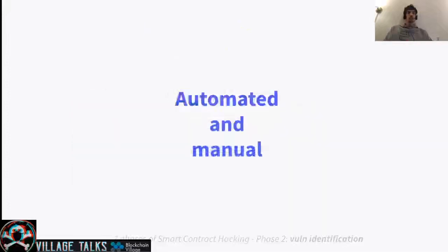One thing that always surfaces when we talk about vulnerability identification in smart contracts is the difference between automated and manual work. I think this also happens in application security, where you might have scanners that can help you identify vulnerabilities in an application, but pen testers also tend to do manual work. It's always about complementing automated and manual work — you shouldn't fully lean towards one or the other, but do both to find vulnerabilities.